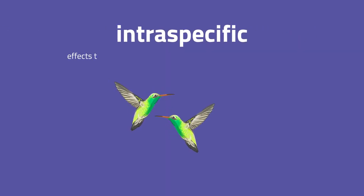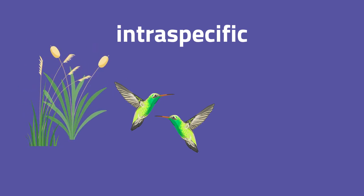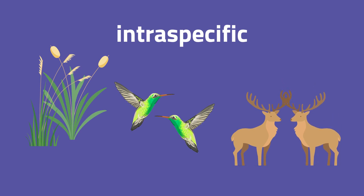Intraspecific interactions are the effects that individuals of the same species have on one another. For example, intraspecific competition occurs between members of the same species, like plants competing for light, hummingbirds competing for nectar, and male deer competing for mates.